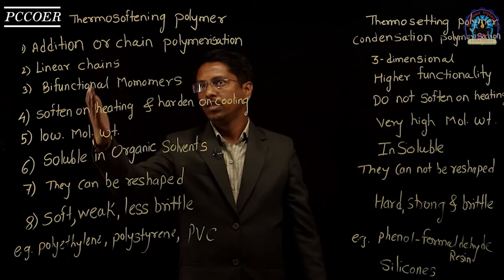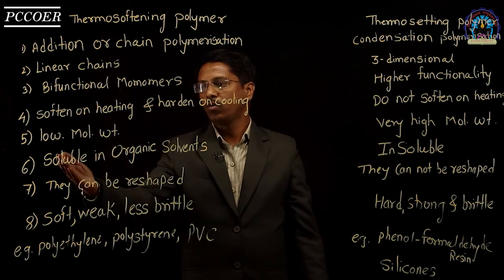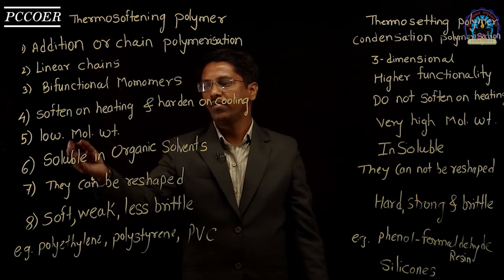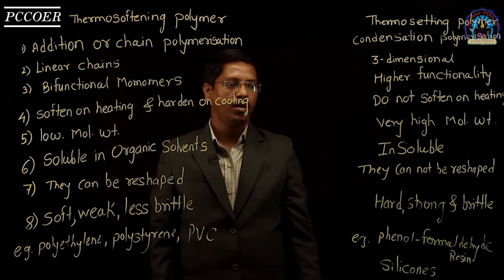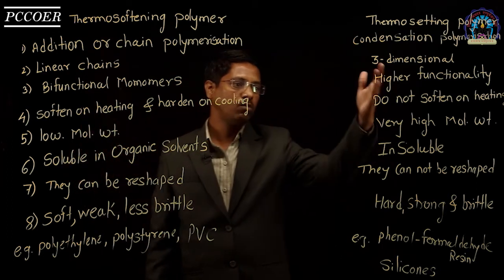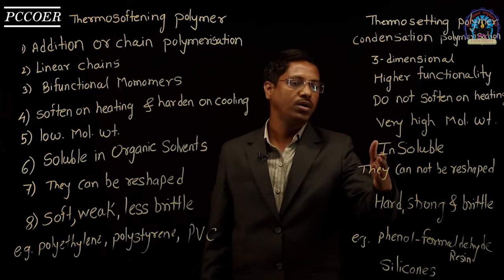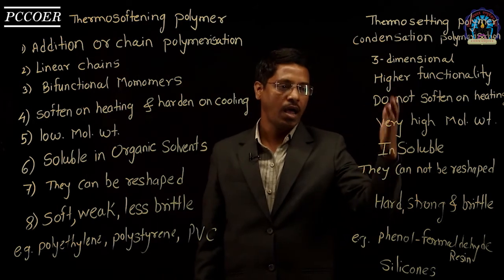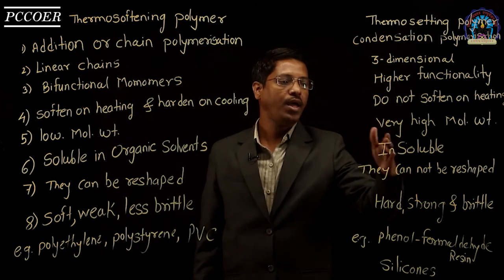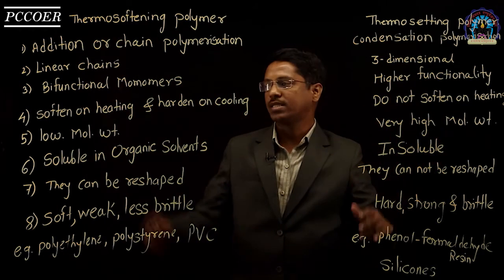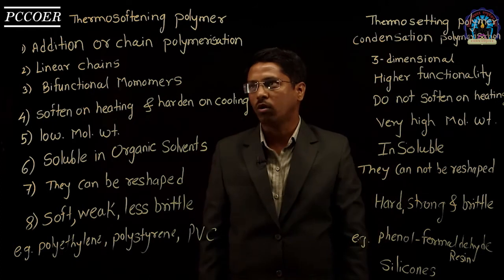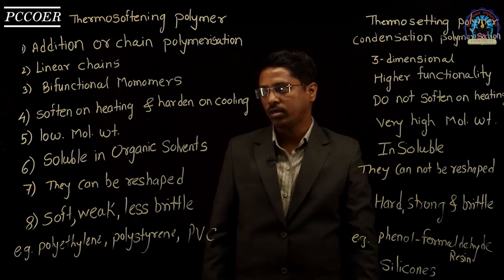Fifth difference: thermosoftening polymers have low molecular weight, while thermosetting polymers have very high molecular weight compared to thermosoftening polymers.